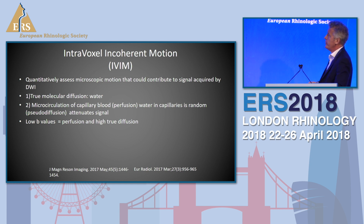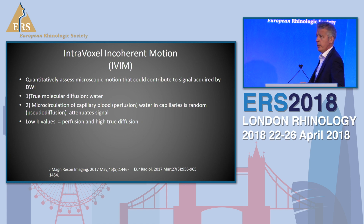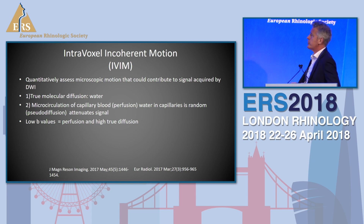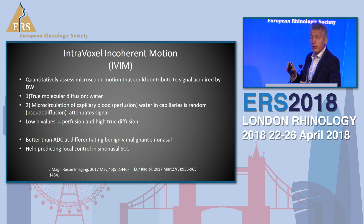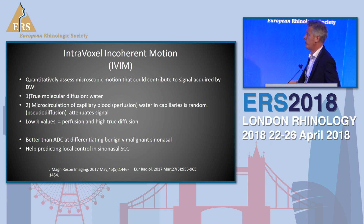The last thing to mention - you might hear about this in the future - is intravoxel incoherent motion, or IVIM. It quantitatively measures the motion that contributes to the signal in diffusion-weighted imaging, divided into true diffusion of water and microcirculation of capillary blood, which is random and goes in all directions - called pseudodiffusion. Low values relate to perfusion and high values relate to diffusion. It's better than conventional diffusion at differentiating benign from malignant sinonasal tumours, and has also been shown to be useful at predicting local control in sinonasal squamous cell carcinoma.